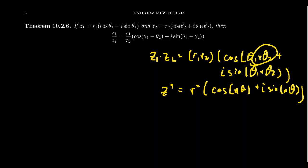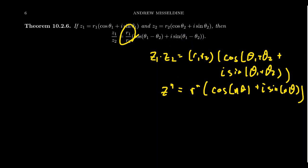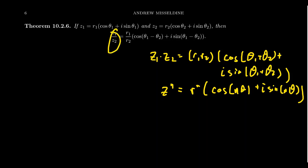Notice the pattern: whatever operation you're doing with the complex numbers, you do the same to the moduli — multiplication gives multiplication of moduli, exponents give an exponent of the modulus, and division gives division of moduli. The argument is always one order of operation lower: multiplication adds the arguments, exponents multiply the arguments, and division subtracts the arguments.